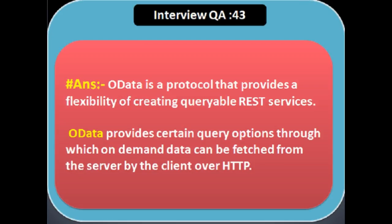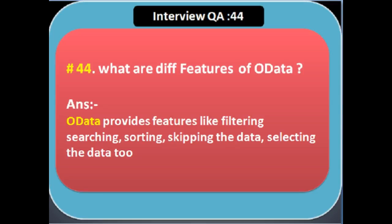OData is a protocol that provides the flexibility of creating queryable REST services. OData provides certain query options through which on-demand data can be fetched from the server by the client over HTTP. OData allows you to create queryable services and provides features like filtering, searching, sorting, skipping, and selecting data.